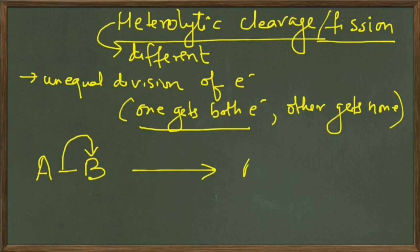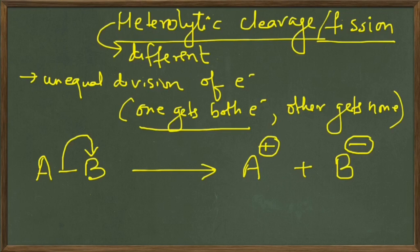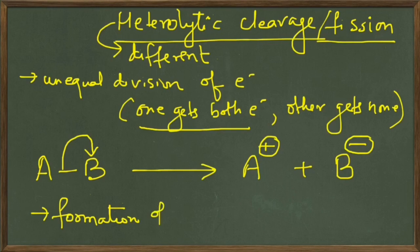So we have A and B, and the arrow shows that B has taken both the electrons. B has its own electron plus an extra electron, and therefore we add a minus charge to B. A has lost its own electron and therefore has a plus charge. Heterolytic cleavage leads to the formation of ions.